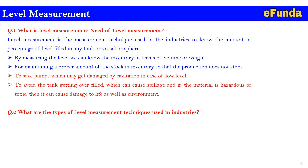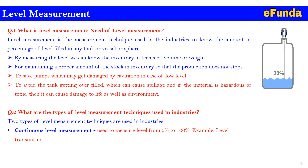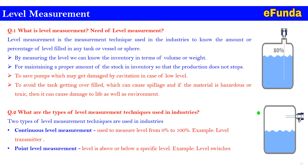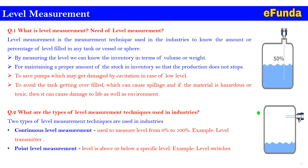Also to avoid the tank getting overfilled, which can cause spillage, and if the material is hazardous or toxic, it can cause damage to life as well as the environment. Question 2: What are the types of level measurement techniques? There are two types: continuous level measurement, where the level is measured from 0% to 100% using level transmitters, and point level measurement, which determines whether the level is above or below a specific point using level switches.